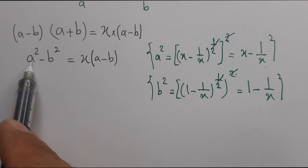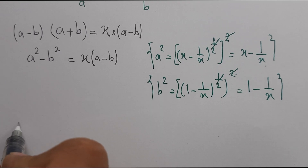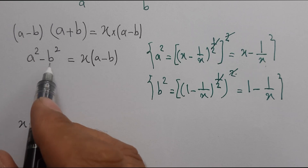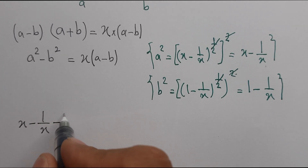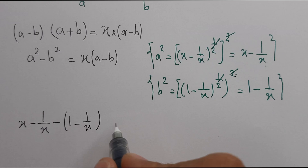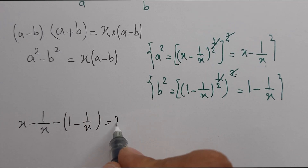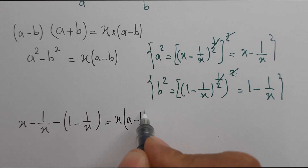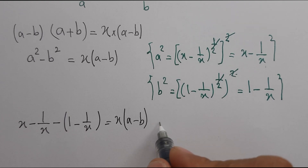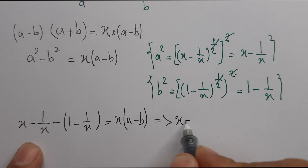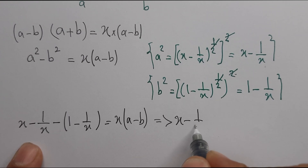So a squared is x minus 1 minus 1 over x, and on the right side we have x times a minus 1 over x.